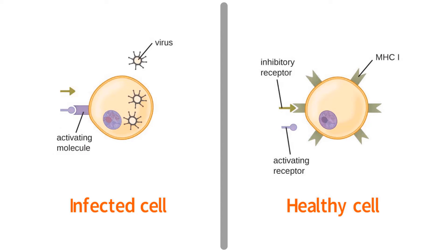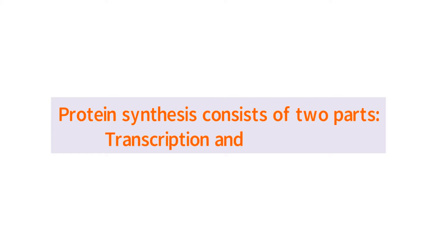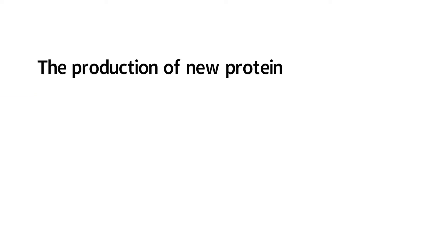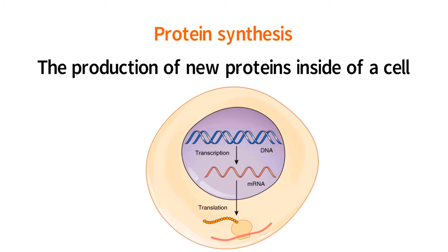In order to understand how antigens are part of vaccination, it is necessary to understand how cells are able to produce proteins such as antigens. Number two: protein synthesis consists of two parts — transcription and translation. The production of new proteins inside of a cell is referred to as protein synthesis and occurs in the cytoplasm. Transcription is the first step in protein synthesis.